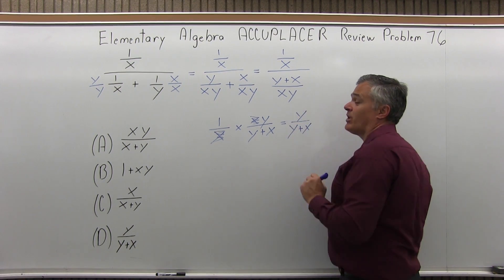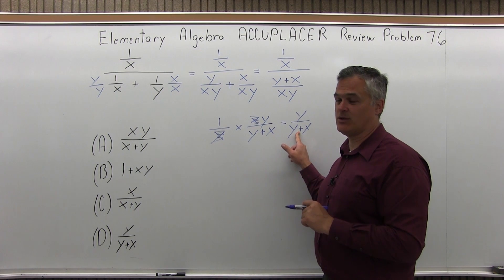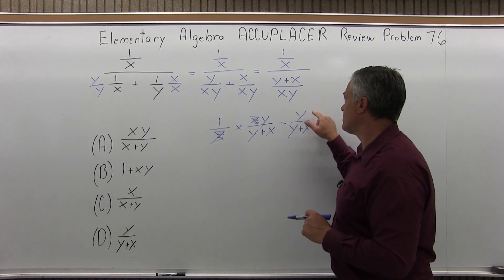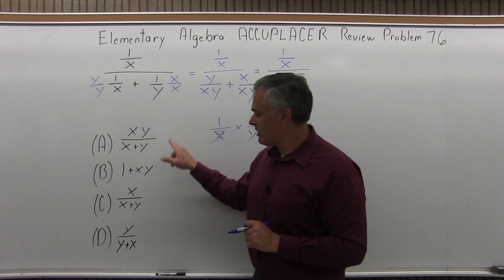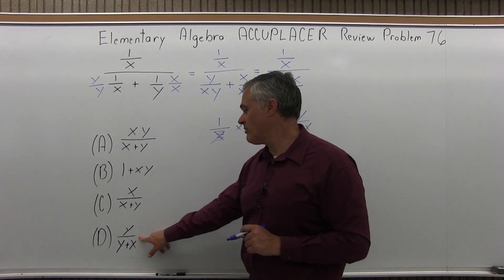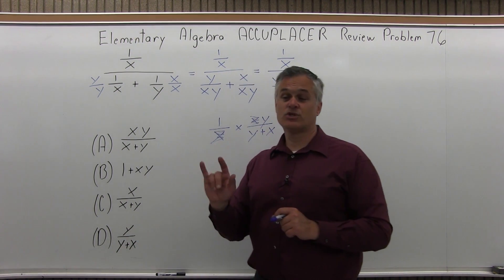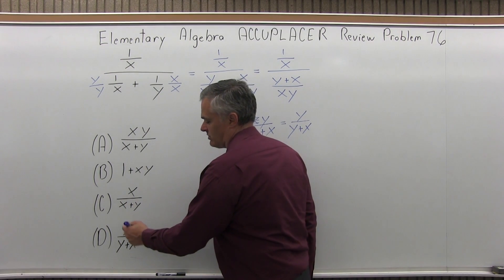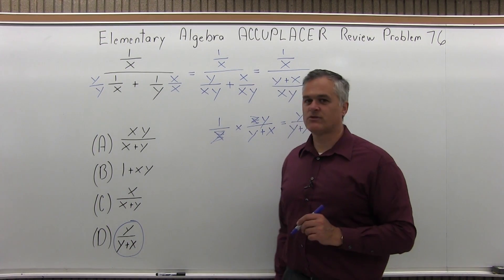Now again, y in the top, y in the bottom cannot be canceled because it's a plus in between the two parts in the denominator. So I get an answer of y over y plus x. And as I look at my options, option D is an exact match, y over y plus x, which would be the same as y over x plus y. You can switch the order of the addition to suit the problem you have. But option D is a perfect match for problem 76, and that's the answer.